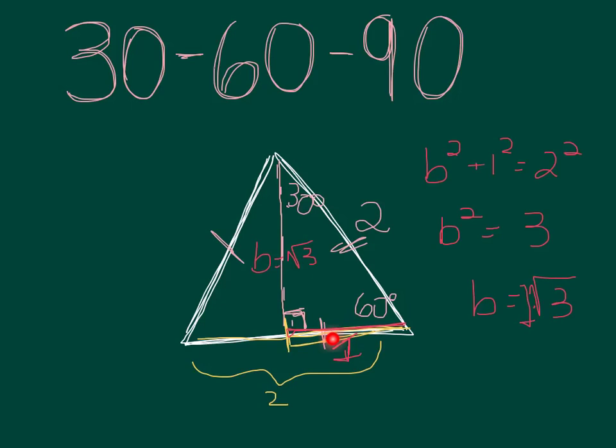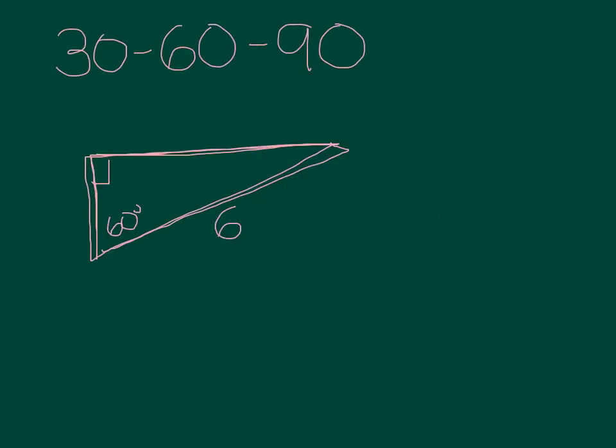Let's look at another example. So here I have another triangle and this time it's a 30-60-90 and I've labeled the hypotenuse as 6. Well from the last slide we saw that that means that the short leg has to be half of 6. So the short leg is 3. And then the other side, the long leg, will be 3 times the square root of 3.